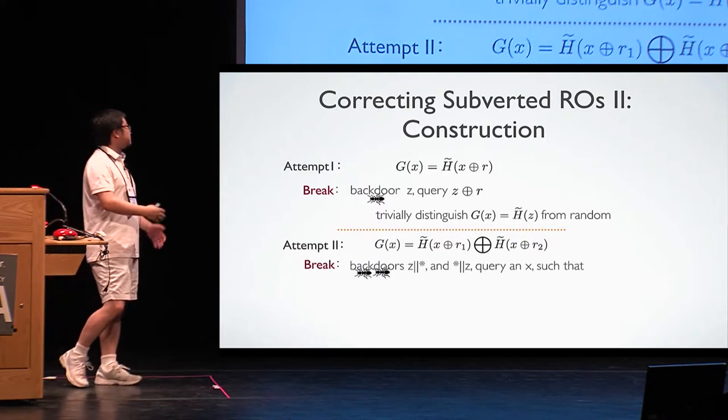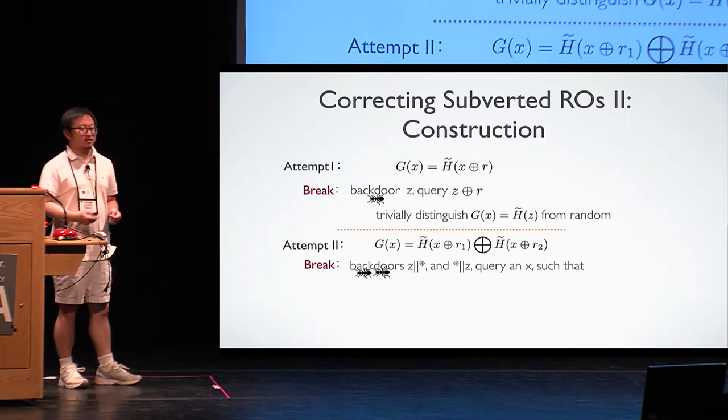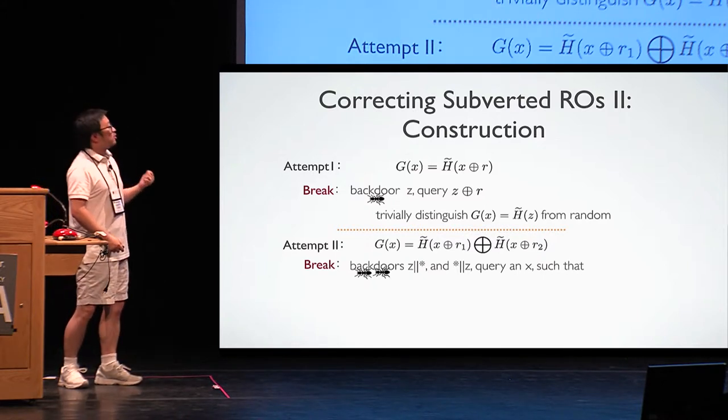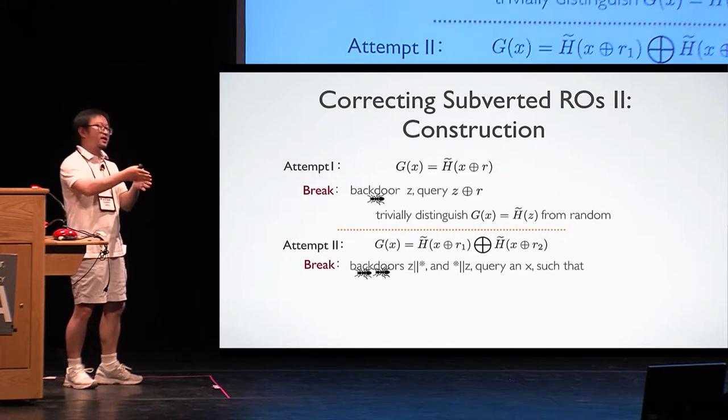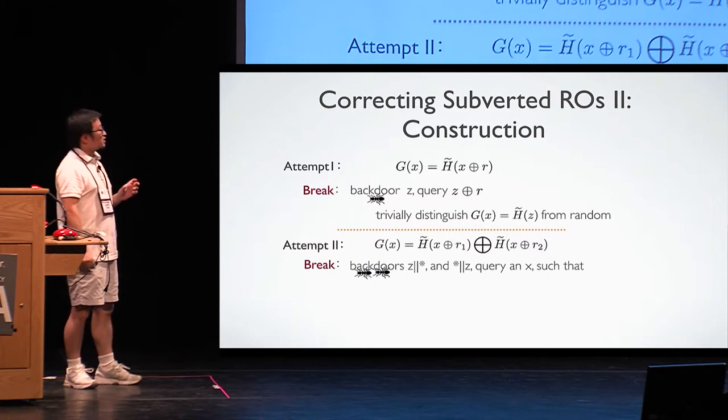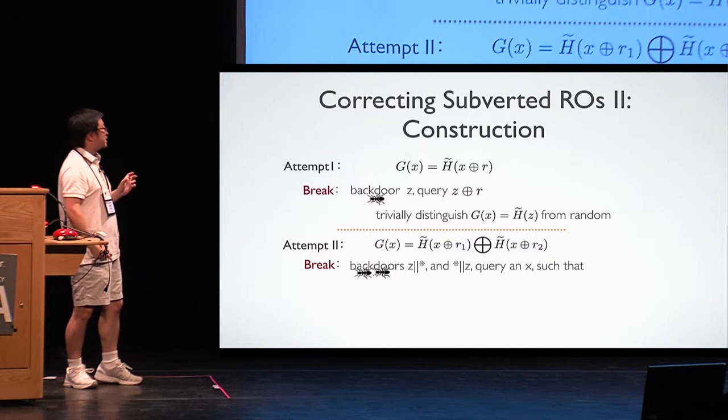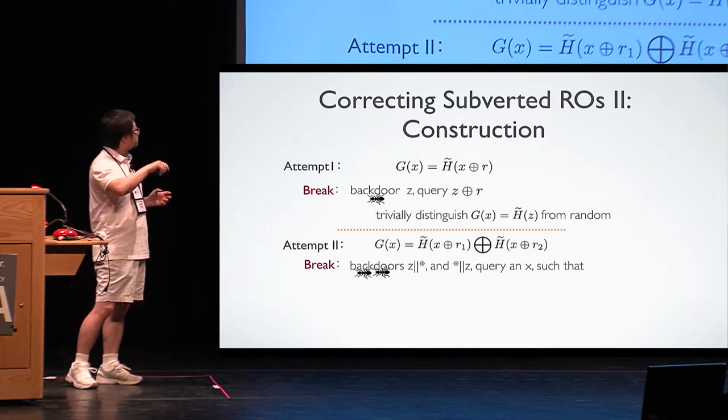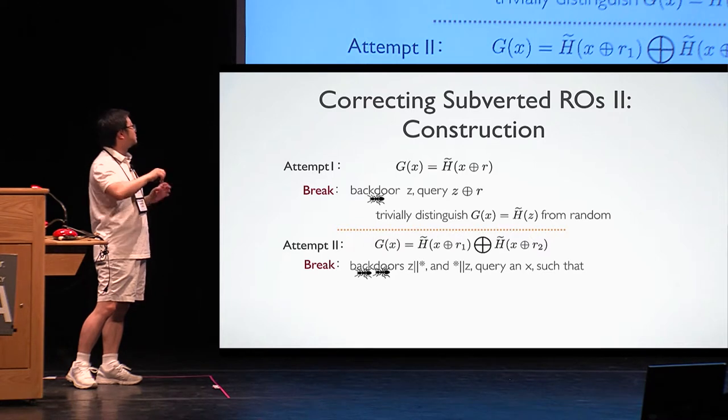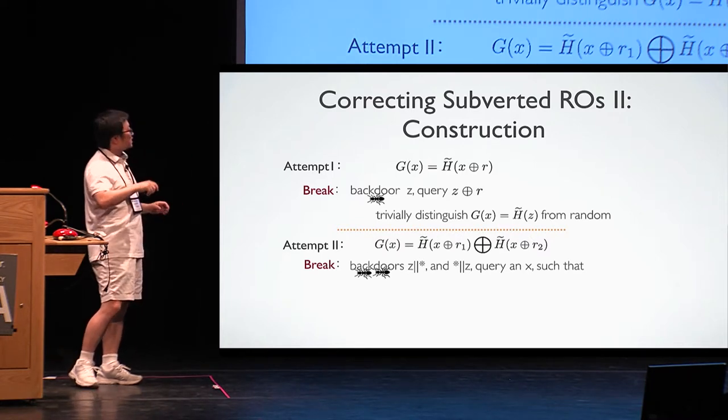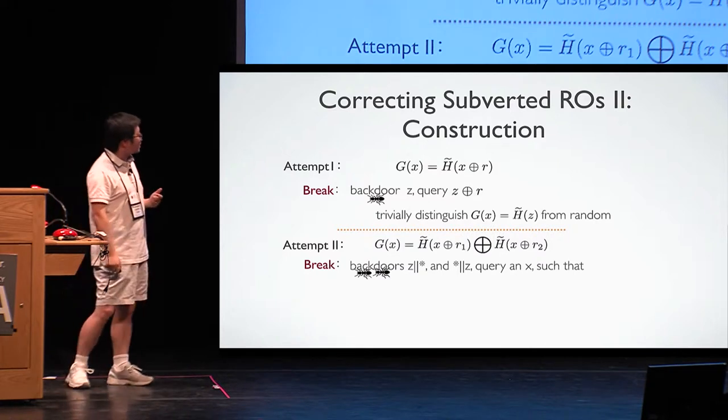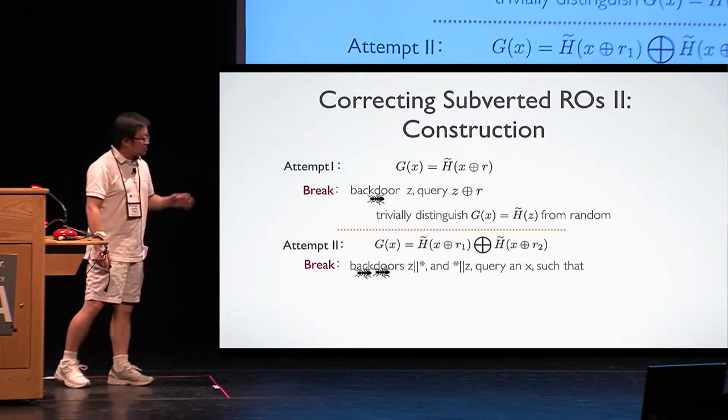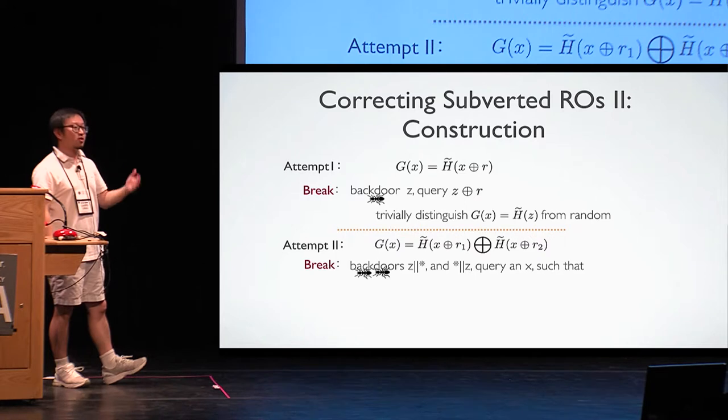But actually, the attacker could just do something slightly smarter. He plants slightly more backdoors. Instead of planting one, he's going to try to divide input into half. There are going to be two types of backdoor. The first type of backdoor contains a very special string z. As long as the first half of string is equal to z, then it's going to be backdoor. Similarly, another half, if the second half is equal to a special string z, it's also backdoors. Still, there's only an exponentially small portion of the input.